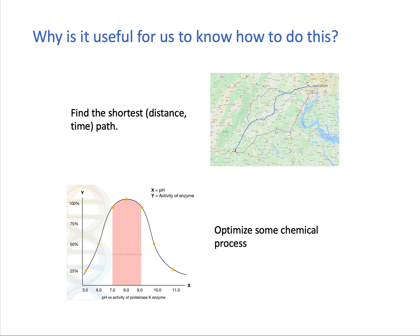There are many other applications — almost all engineering problems can be written as an optimization problem. For example, finding the shortest distance between two points: there may be many roads from point A to point B, but one road has the shortest distance. For air travel, the shortest distance would be a straight line between the two points, but when driving by car you must use roads, so you choose the shortest available route.